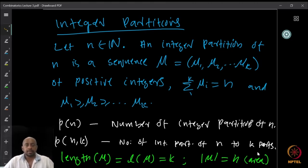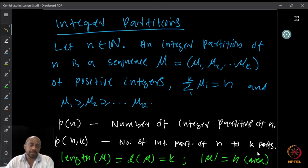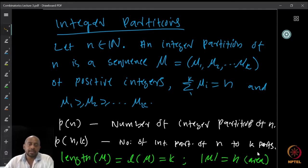Now we already looked at what is called compositions of integers. We have weak compositions and we have compositions. Something very closely related is integer partition. An integer partition of n is a sequence μ = (μ₁, μ₂, ..., μ_k) of positive integers such that the sum of μ_i equals n, and μ₁ ≥ μ₂ ≥ ... ≥ μ_k. A composition of an integer has parts λ₁ to λ_k such that the sum equals n, but here we also require them written in decreasing order.